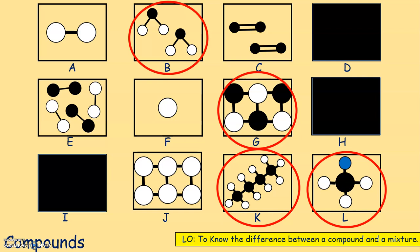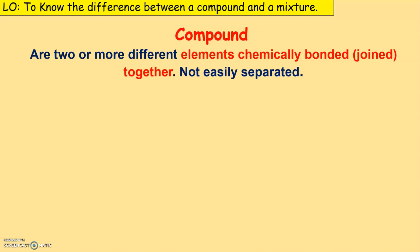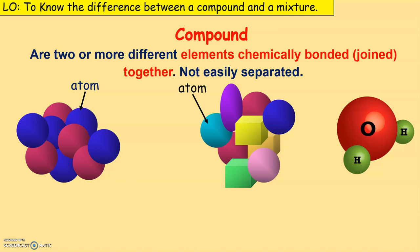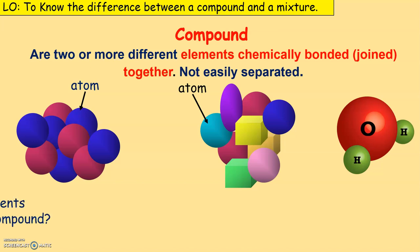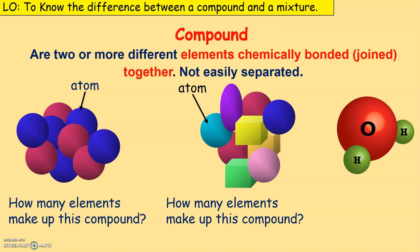Those diagrams show compounds. They have two or three different types of atoms — B has black and white, G has black and white, K has black and white, L has blue, black, and white. It doesn't matter how they're arranged; the fact that they have two or more different types of atoms makes them a compound. Compounds are two or more different elements chemically bonded together and are not easily separated. For example, water is made up of two atoms of hydrogen and one atom of oxygen — it requires force to break those bonds.